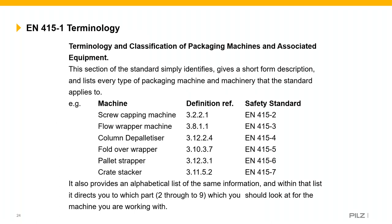EN 415-1 lists every type of packaging machine alphabetically with a short description and informs you which part of the standard applies. For example, a screw capping machine — definition reference 3.2.2.1, described as a closing machine which applies a threaded cap or lid usually to a rigid container — falls under EN 415-2. You do not need to purchase 415-1 if you already know what type of packaging machine you have and which standards apply.